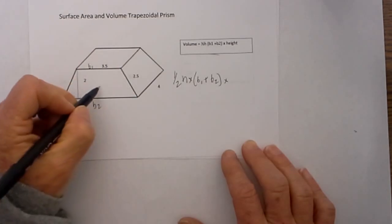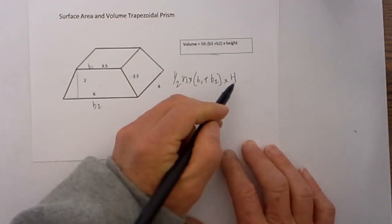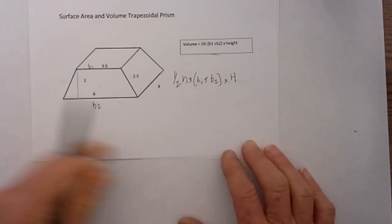The height is the distance between these two bases. That would be the height of the prism and I will have that as a capital H.